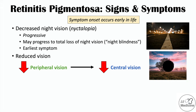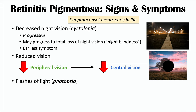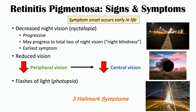Central vision loss occurs when the macula is affected. This condition can also lead to flashes of light, which we refer to as photopsia. The retina is a light-sensitive layer of neurosensory cells, and as it slowly degrades and degenerates, it can produce a sensation of flashes of light. These three findings — decreased night vision, reduced vision in general, and flashes of light or photopsia — are the three hallmark symptoms of retinitis pigmentosa.